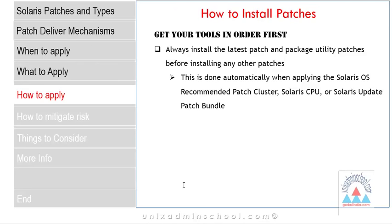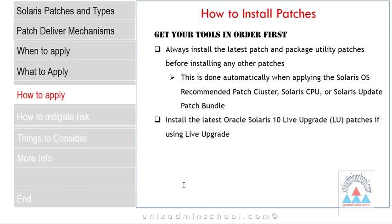How do you install these patches? First, get your tools ready. Always install the latest patch and package utility patches before installing any other patches. This is normally done when applying the Solaris OS recommended patch cluster, Solaris CPUs, or Solaris update patch bundles. If your organization is using Solaris Live Upgrade, you can install the Solaris 10 live upgrade patches using the live upgrade features.